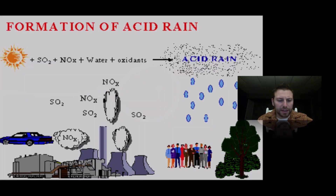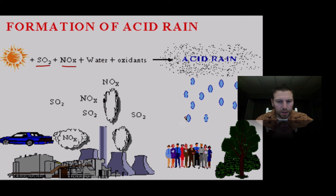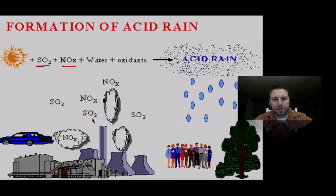The formation of acid rain: our sulfur and nitrogen compounds react with the water in the atmosphere to form acid rain. This pollution can come from anywhere — car exhaust, factories — basically the burning of any type of fossil fuel.